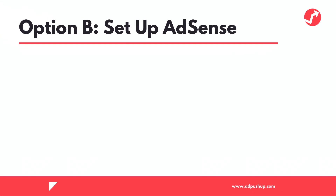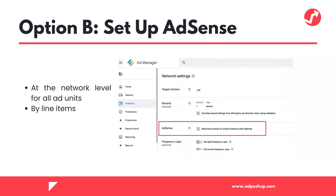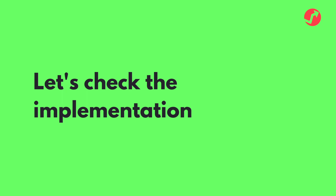If you're not able to find any ad networks that can start working with you to backfill your inventory, do not worry — we have two more options to present to you. The first one is to set up AdSense. You can set up AdSense to start backfilling your revenue on the network level for all ad units or by line items. We're going to see next how to implement this in GAM 360.